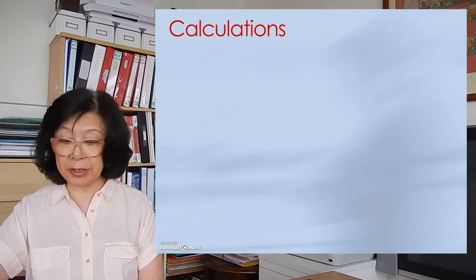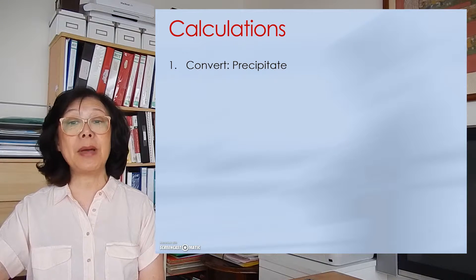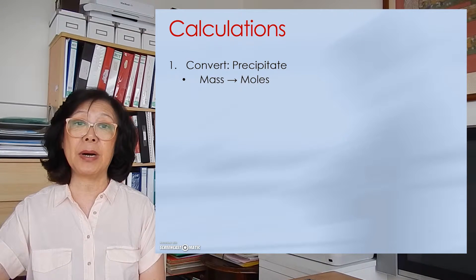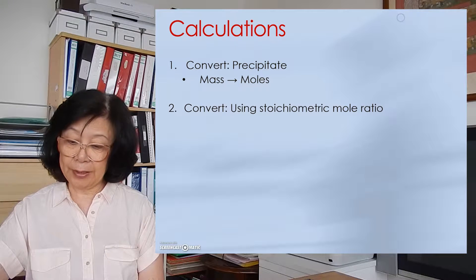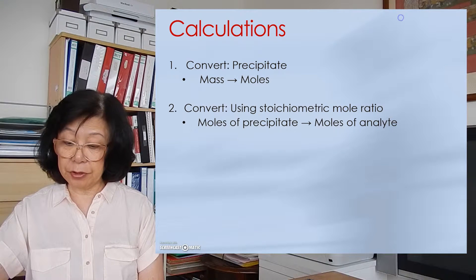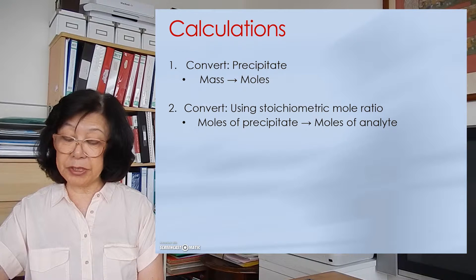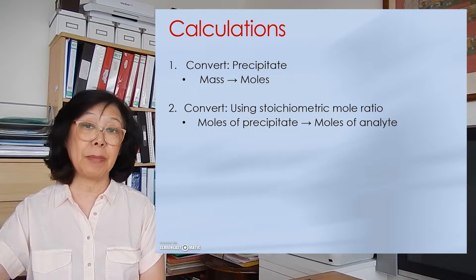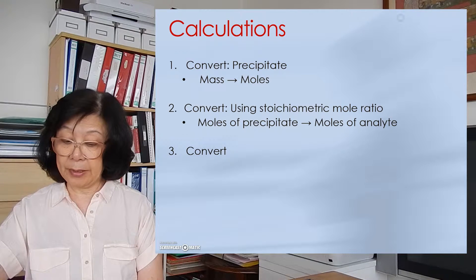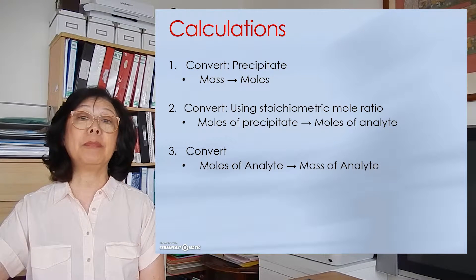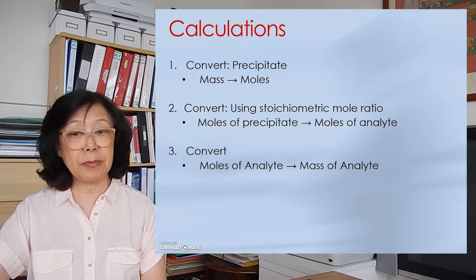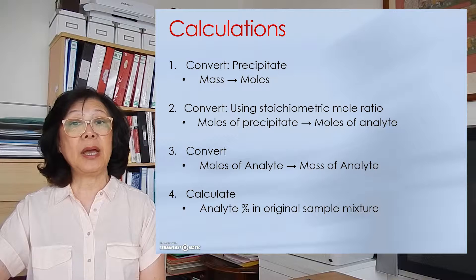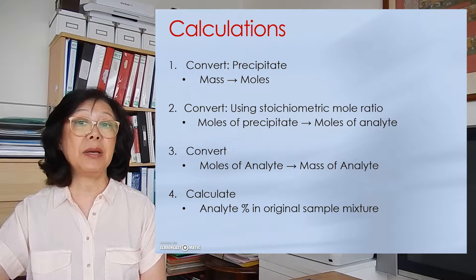The calculation involves: first, converting the mass of the precipitate into moles of the precipitate by dividing it by the molar mass. Then using the stoichiometric mole ratio to convert the moles of the precipitate to the moles of the analyte, using the coefficients from the balanced equation. Then we convert the moles of the analyte to mass of the analyte using its molar mass, and finally calculate the percent of analyte present in the mixture sample.